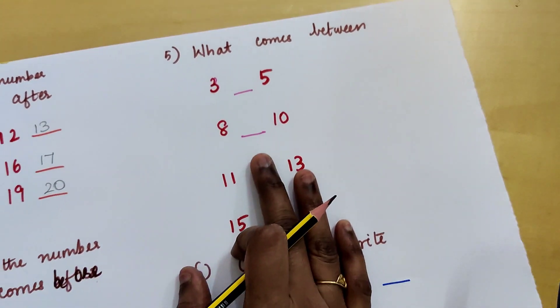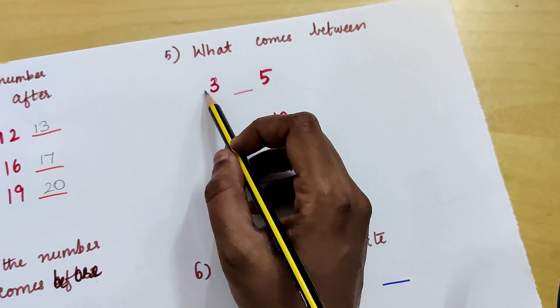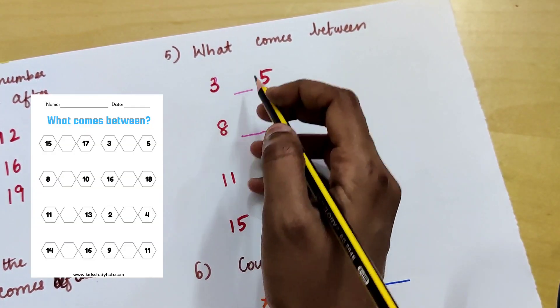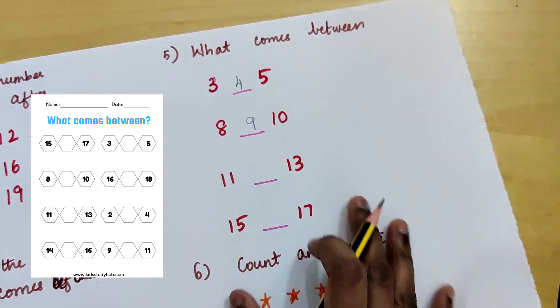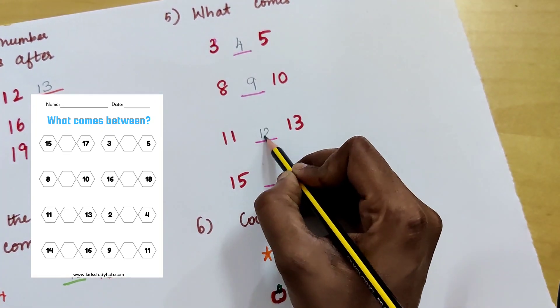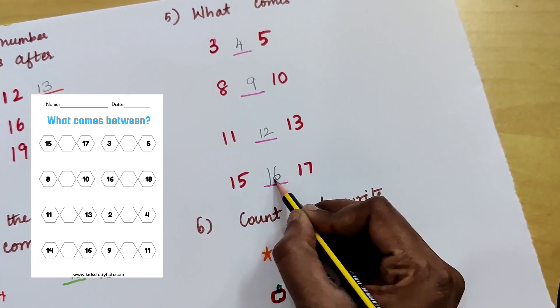Then what comes between. So we have to give 2 numbers and they have to write the between number. 4, 9, 12 and 16.